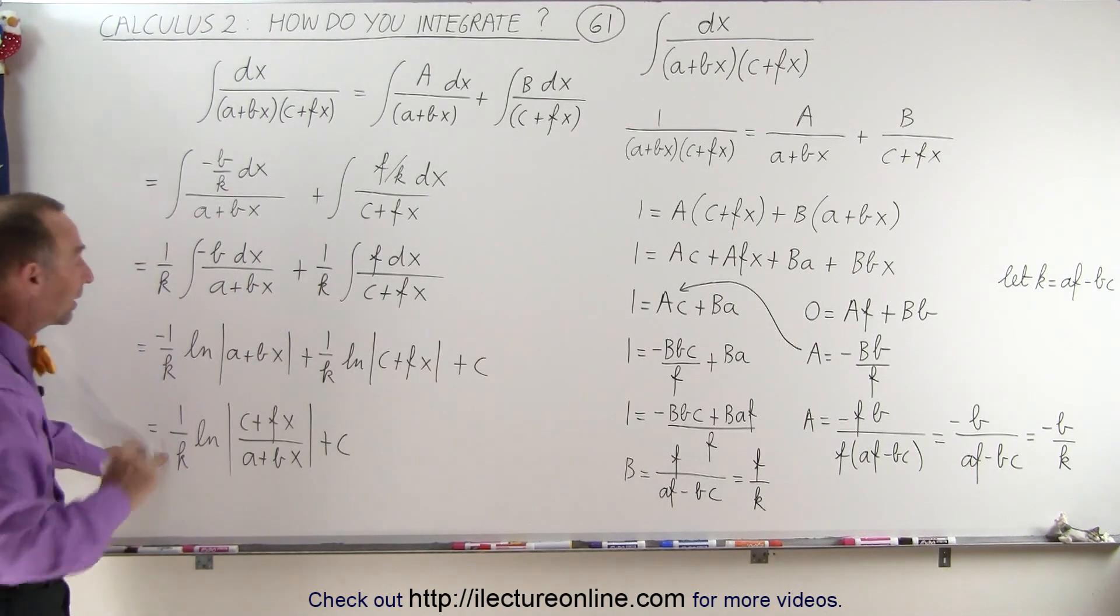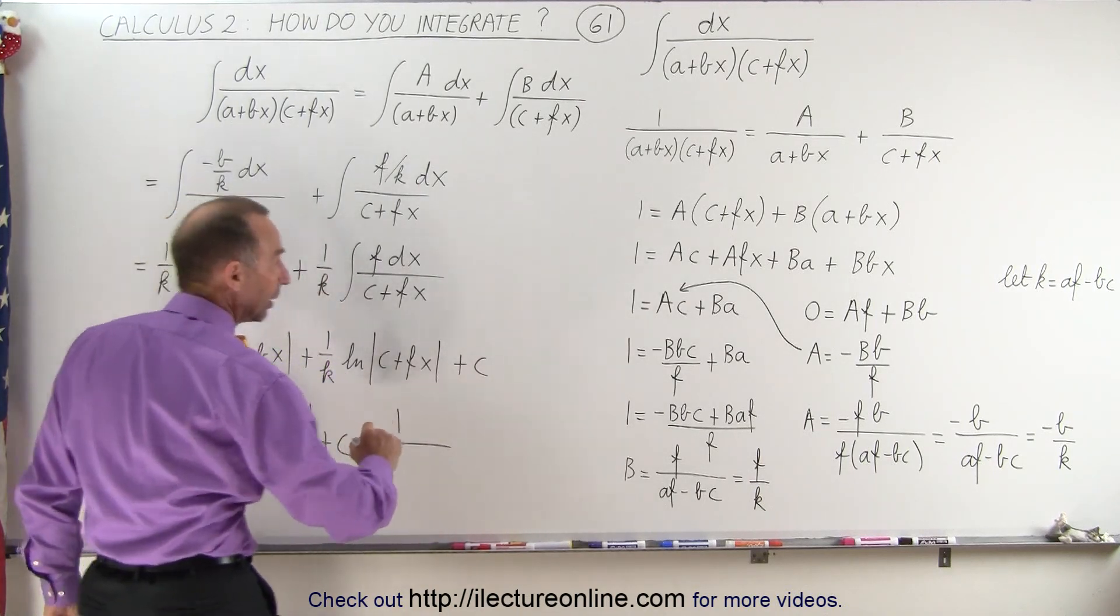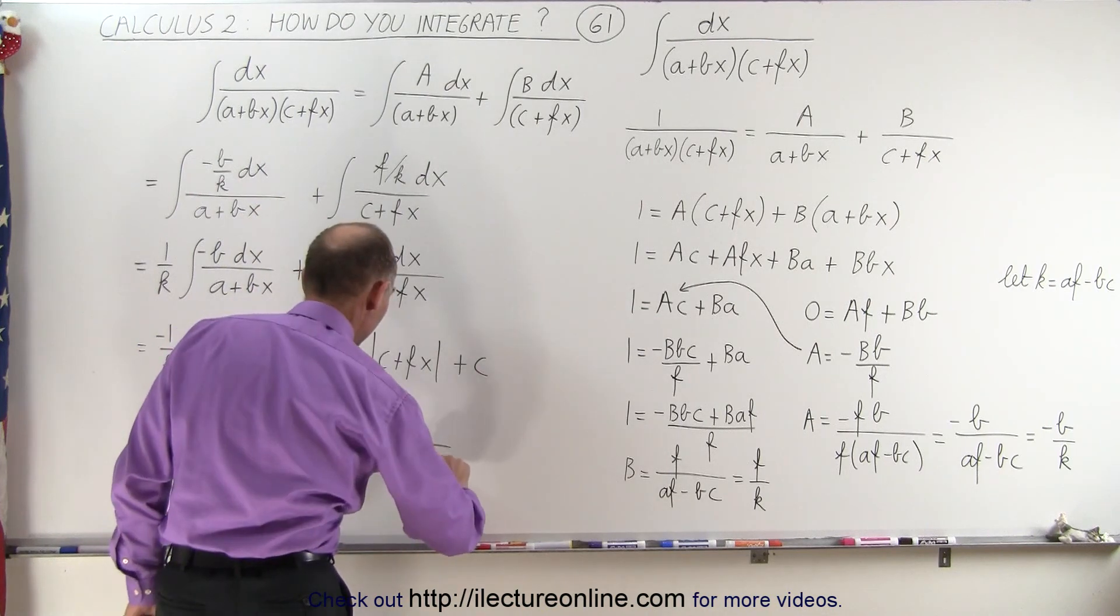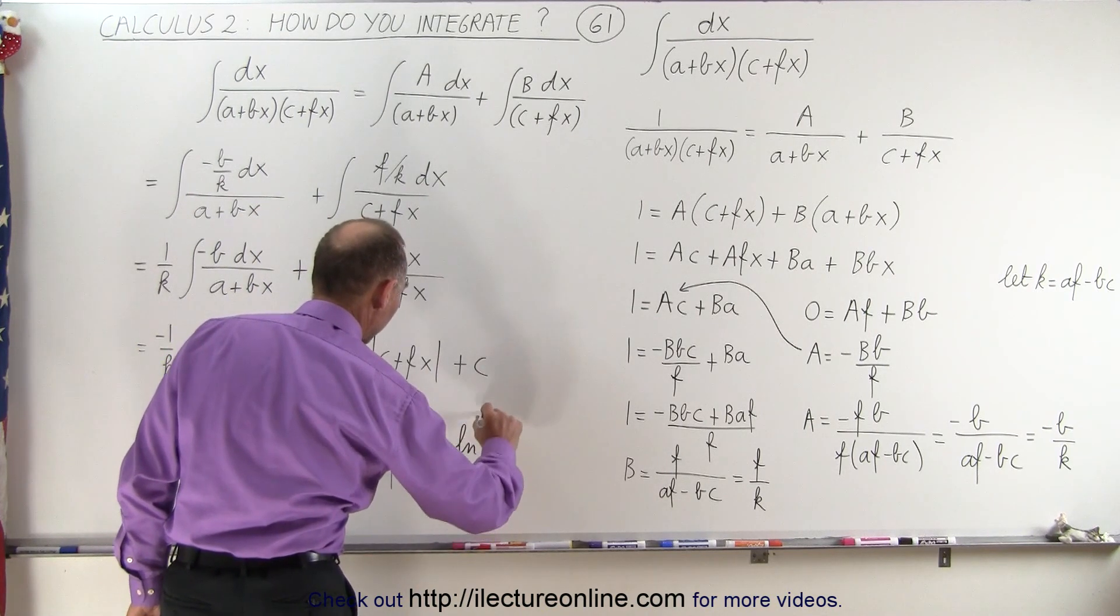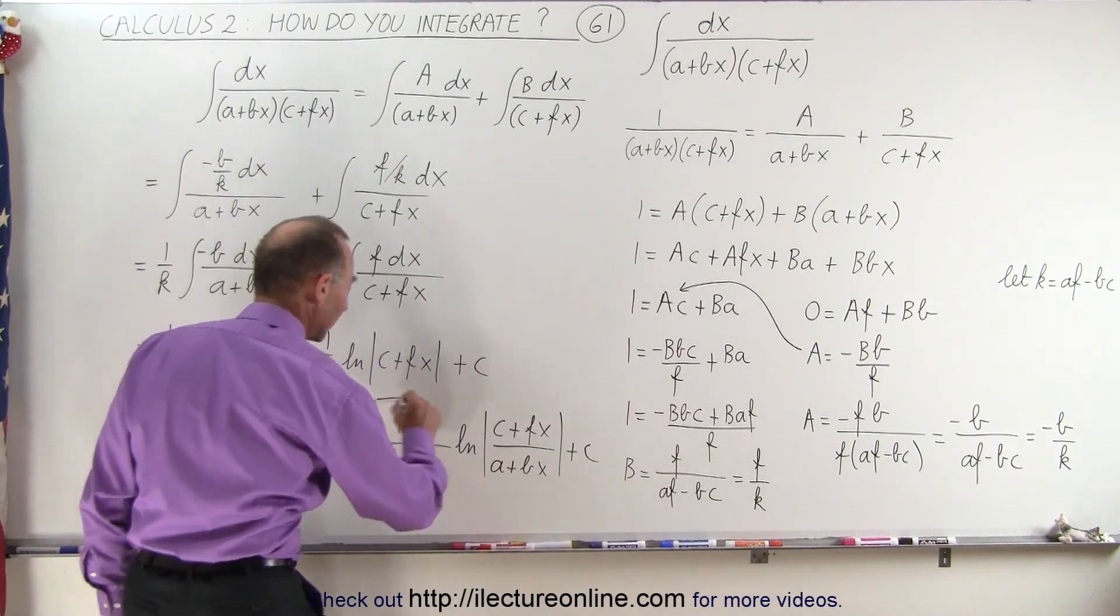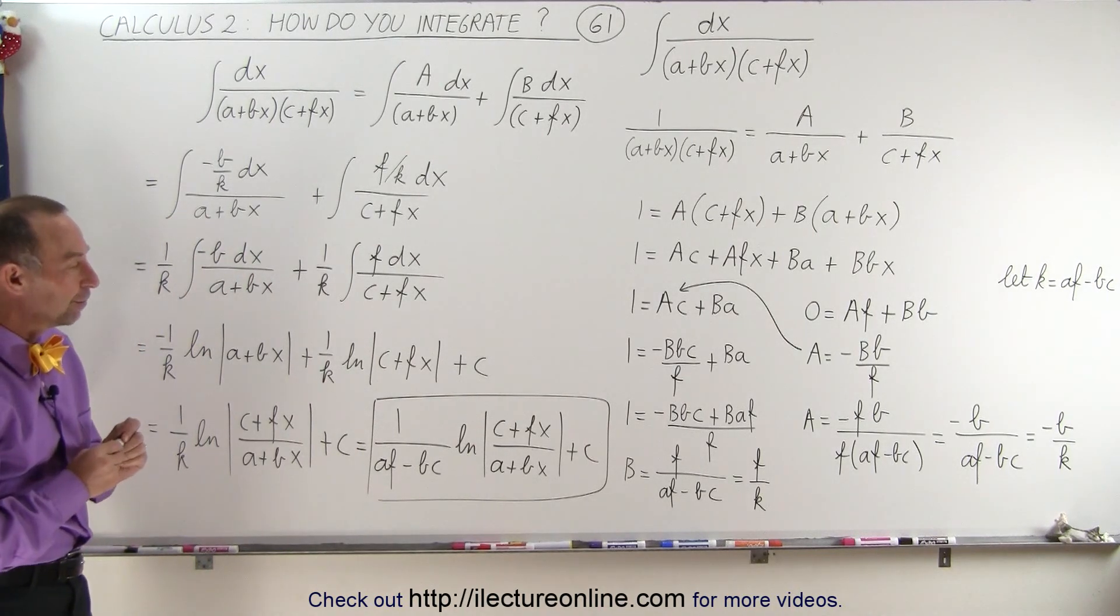And then if you really insist, we could then go back and rewrite what k is equal to, so this can then be 1 over the quantity (af - bc) times the natural log plus a constant of integration, and then notice that would be the final result of that particular integral.